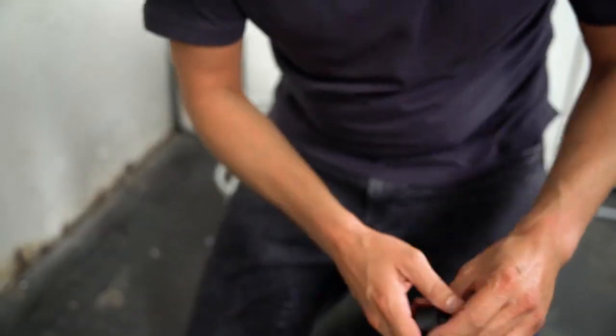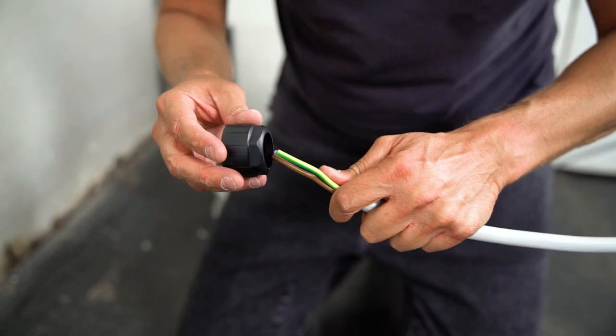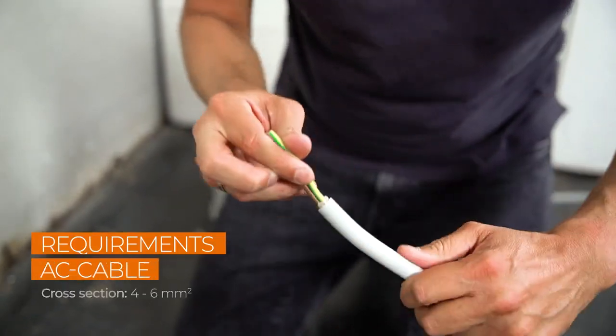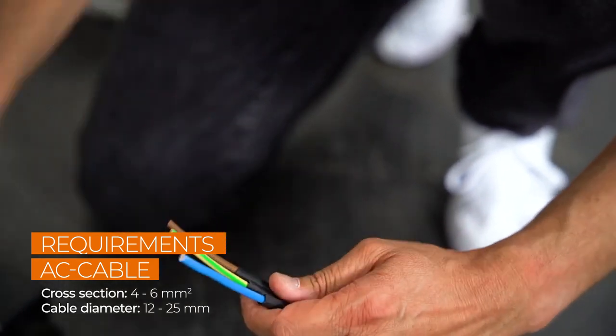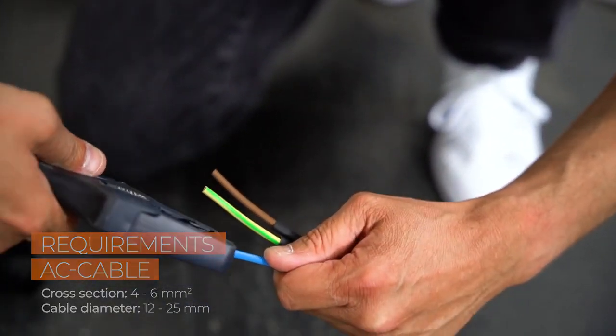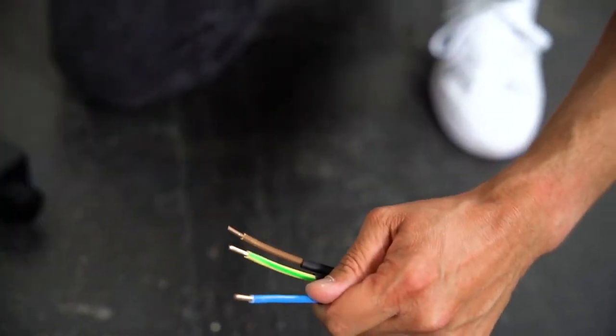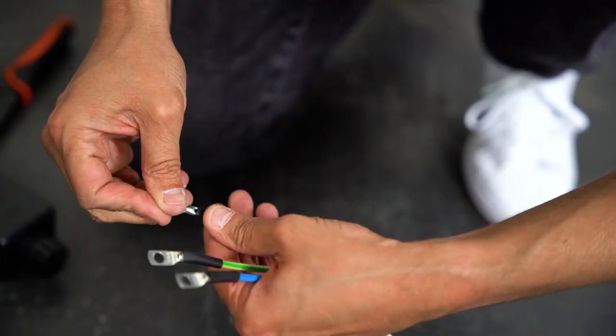Now let's connect the AC plug. Remove approximately 4-5 cm of the cable sheath of the AC cable. Then strip approximately 2-3 mm of the inner cables. Add cable terminals and heat shrinks to the AC cables.